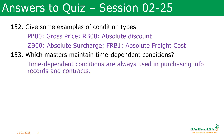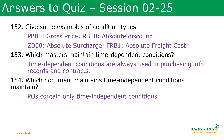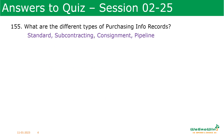Which masters maintain time-dependent conditions? Time-dependent conditions are always used in purchasing info records and contracts, because there we are mentioning what is the validity period for them. Which document maintains time-independent conditions? Purchase orders maintain time-independent conditions. What are the different types of purchasing info records? Standard, subcontracting, consignment, and pipeline — there are four types.